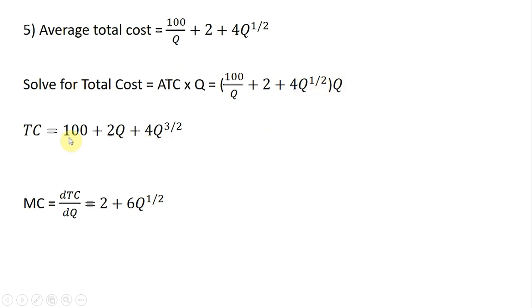Next, taking the derivative of total cost, we're going to get 2. Bring down the 3/2 in front, so 3 times 4 is 12. Dividing 12 by 2 leaves us with 6. And then 3/2 minus 1 is just Q raised to the 1/2 power.